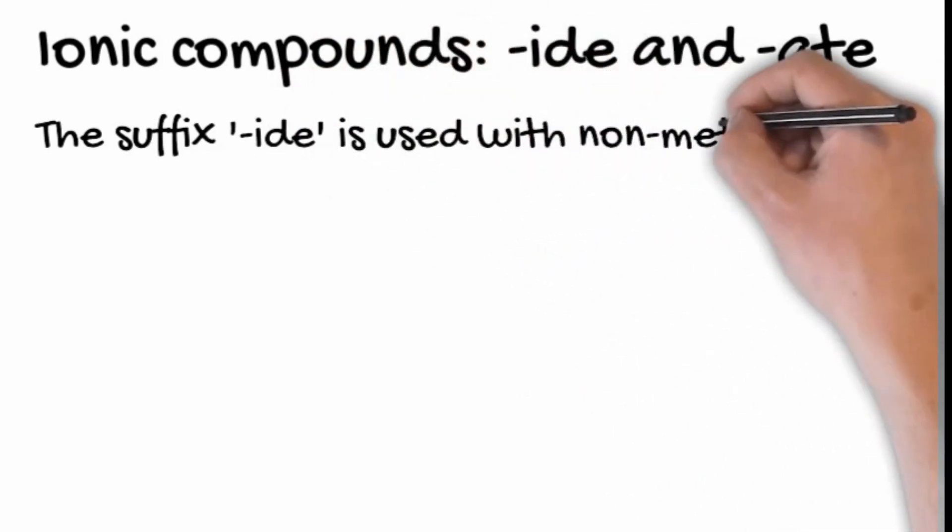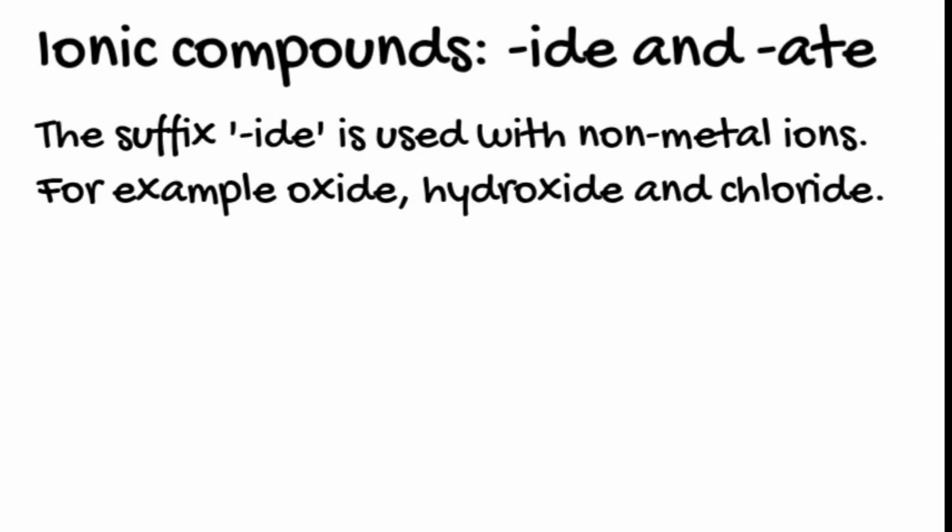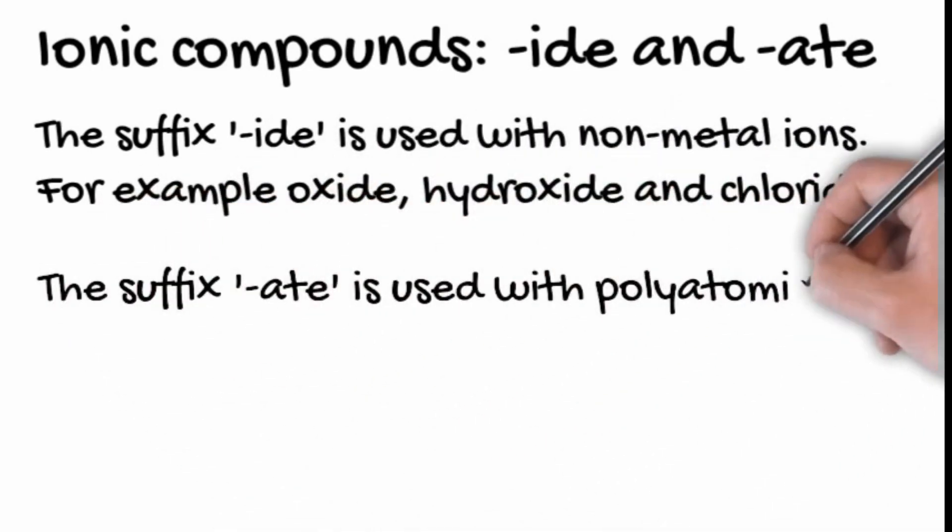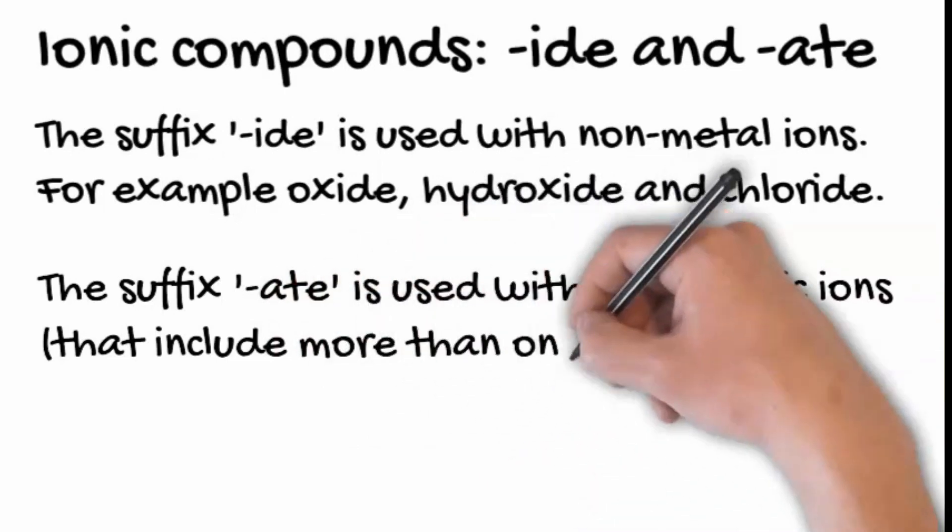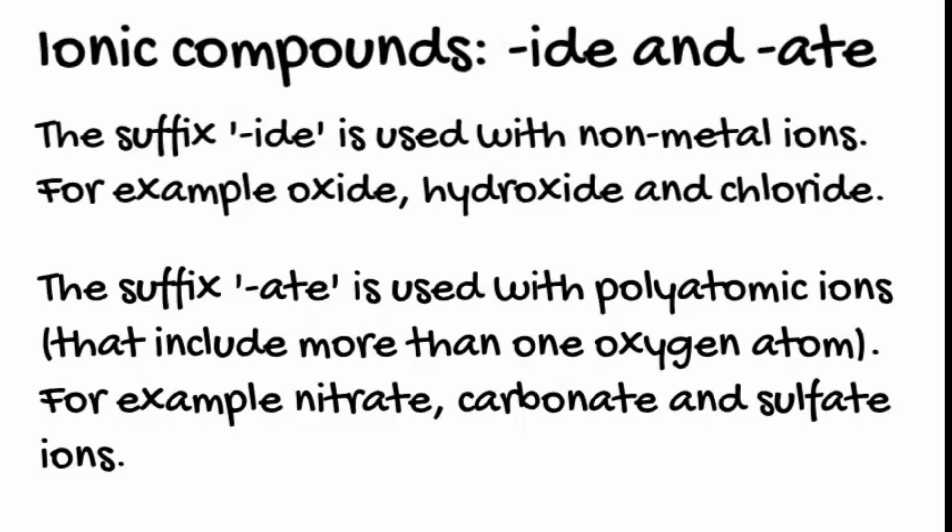Ionic compounds often use the terms aide and ite. The suffix aide is used with nonmetal ions such as chloride, oxide, and fluoride. The suffix ite is used with polyatomic ions where there's more than one oxygen atom, for example nitrate, carbonate, and sulfate ions.